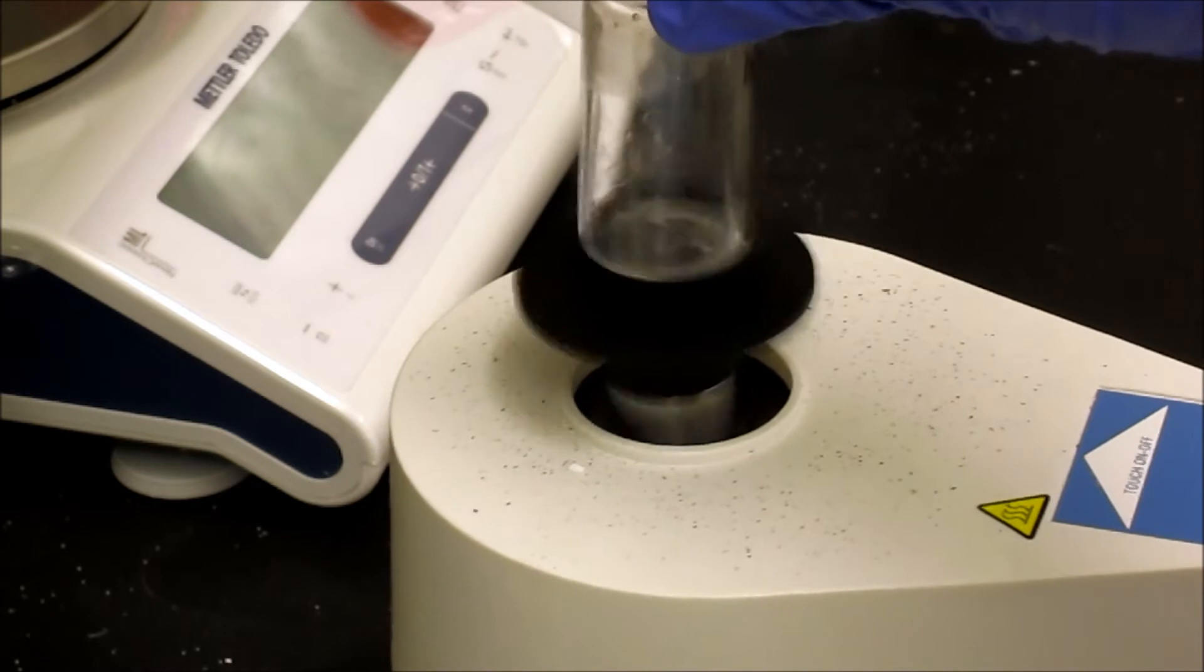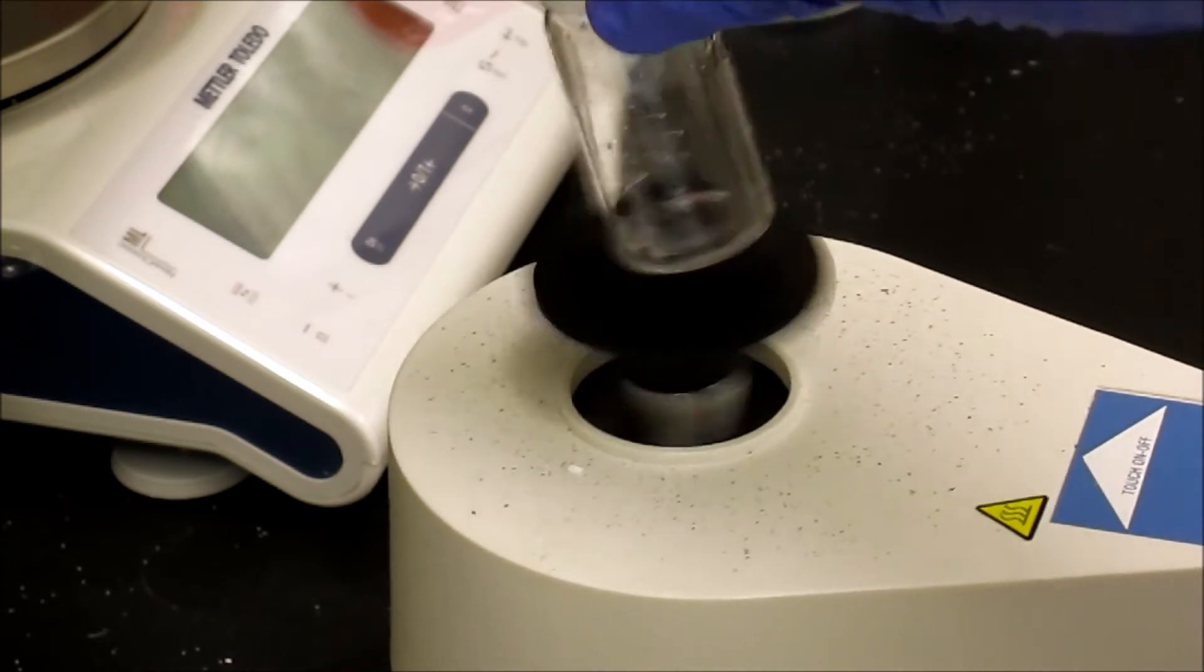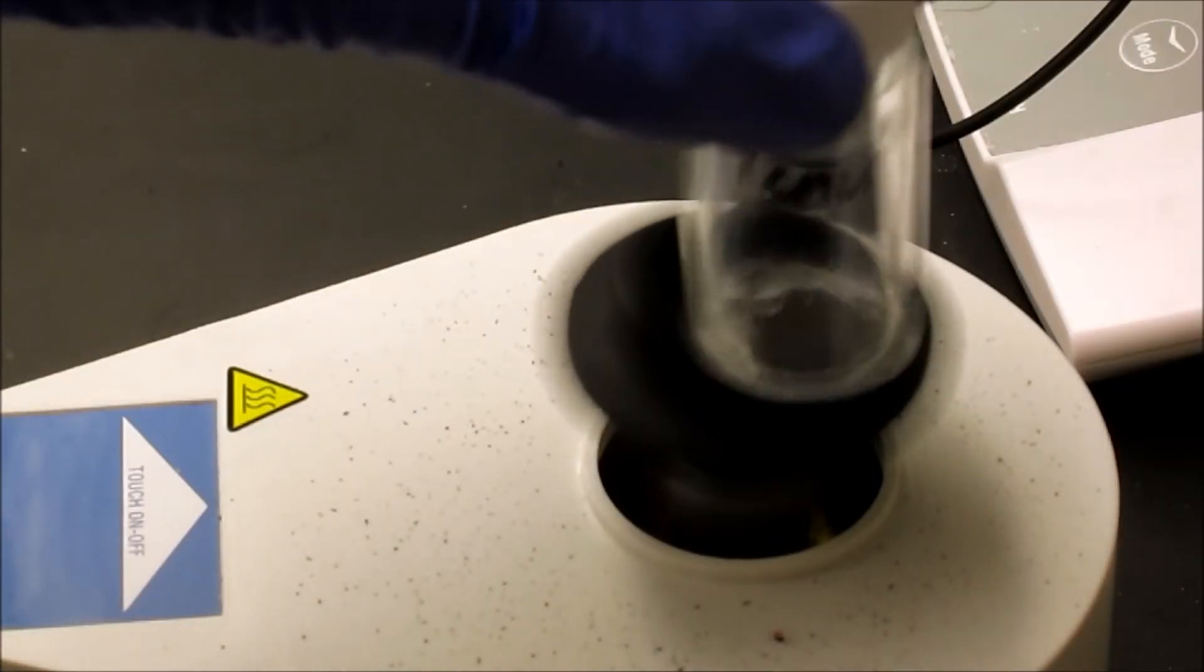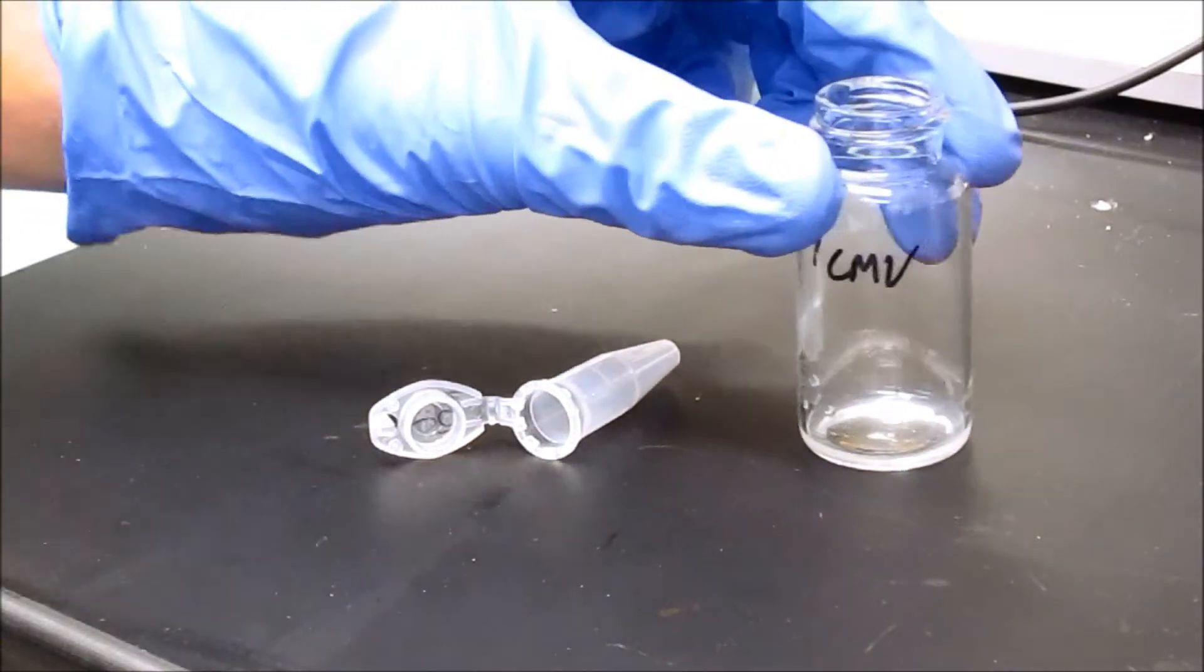Then, each vial is vortexed for 10 seconds every 10 minutes for 1 hour to ensure complete hydration of the lipids. The solution in the vial should appear cloudy indicating the formation of liposomes.